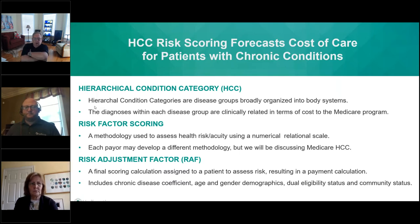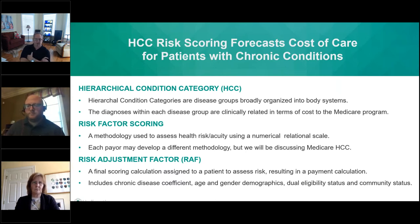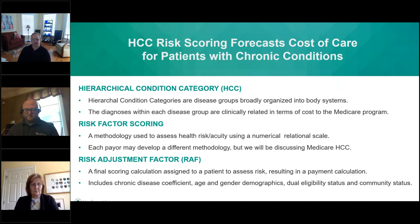HCC scoring is primarily used for Medicare Advantage plans and other similar plans, but in recent years it was also used to track and pay for the Obamacare plans with the insurance companies. The HCC categories are disease groups broadly organized into body systems, and each of these disease groups are clinically related in terms of cost to the Medicare program. The risk factor scoring is an algorithm used to assess health risk and acuity using a numerical relational scale. Each payer may develop a different methodology, but we'll primarily be discussing the Medicare HCC methodology. The final scoring calculation is an accumulation of all the ICD-10s and HCCs assessing patient risk and future reimbursement for those patients in the Medicare Advantage plans.